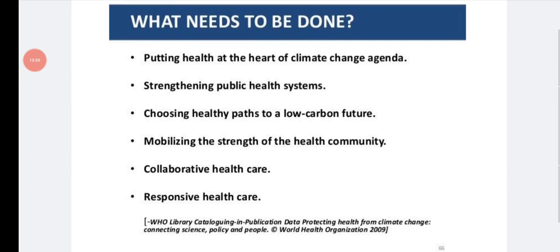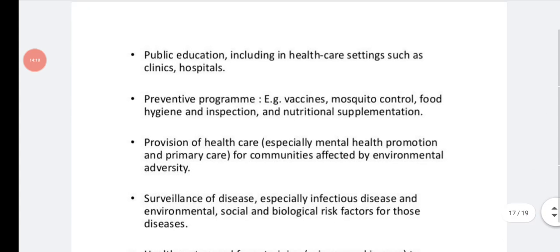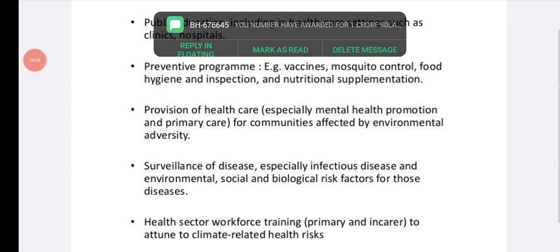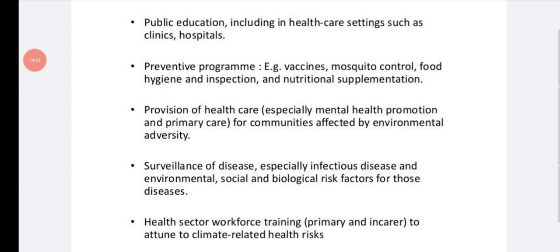And what we can do? Putting health at the heart of climate change agenda. That means we have to give education. Strengthening public health system. Choosing healthy paths to a low carbon future. We should reduce carbon emission in the future. Mobilizing the strength of the health community. Collaborative health care. You should go for collaboration with the media systems and the government to do the health care. Responsive health care. Public education including in health care settings such as clinics and hospitals. Preventive programs - taxes, mosquito control, food hygiene and instruction, and nutrition and supplementation. And provision of health care, especially in the mental health program. And surveillance of disease, especially infectious species, and environmental, social and biological factors about species. Surveillance means survey. You are doing survey to identify the diseases which are present here in the community. Health sector workforce training to attune to climate related health education.